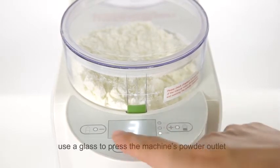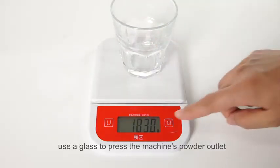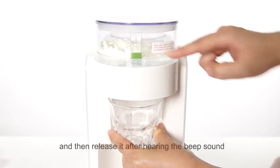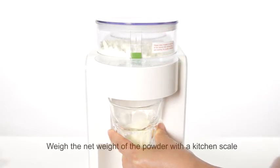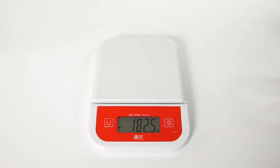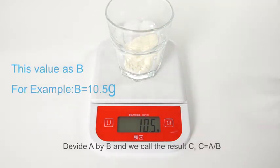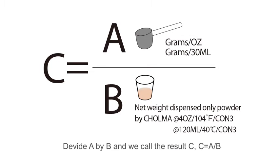Remove the mixer. Use a glass to press the machine's powder outlet. Press and hold the make key for three seconds and then release it after hearing the beep sound. Weigh the net weight of the powder with a kitchen scale. This parameter is referred to as B. Divide A by B and we call the result C. C equals A divided by B.